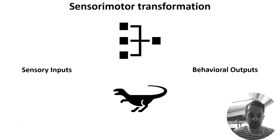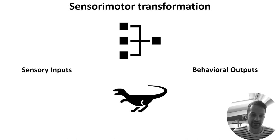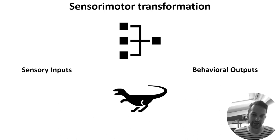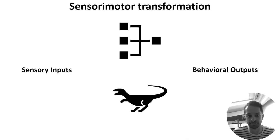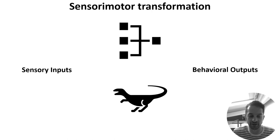We can think of both artificial neural networks and brains as computing input-output transformations. That is, they take input data and output decisions. For example, a trained ANN may take in images and output classes, and similarly, a predator may use its senses, like vision and hearing, to distinguish prey from other animals. In neuroscience, we call this the sensory-motor transformation.